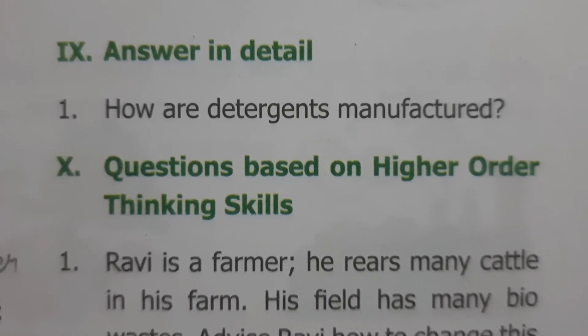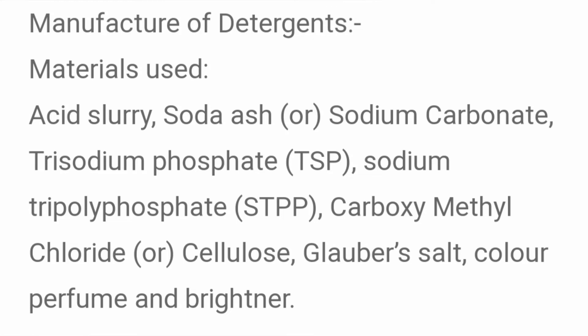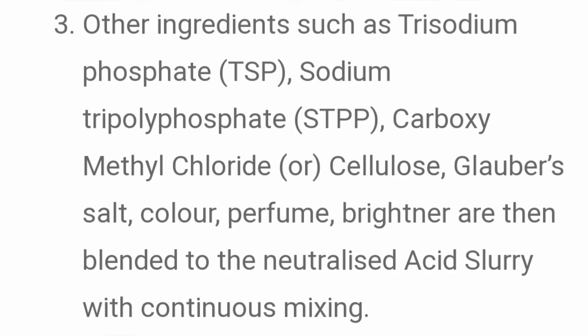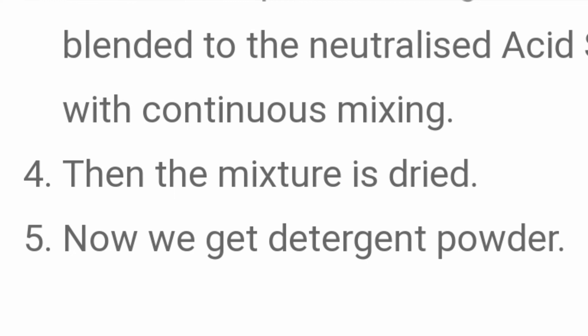Answer in detail: How are detergents manufactured? Materials used: acid slurry, soda ash (sodium carbonate), trisodium phosphate (TSP), sodium tripolyphosphate (STPP), carboxymethyl cellulose, arbuz salts, color, perfume and brightener. Preparation: Acid slurry is first neutralized, then mixed with soda ash and kept for 1 hour for completion of reaction. Other ingredients such as TSP, STPP, carboxymethyl cellulose, salts, color, perfume and brightener are then blended into the neutralized acid slurry with continuous mixing. The mixture is then dried to get detergent powder.